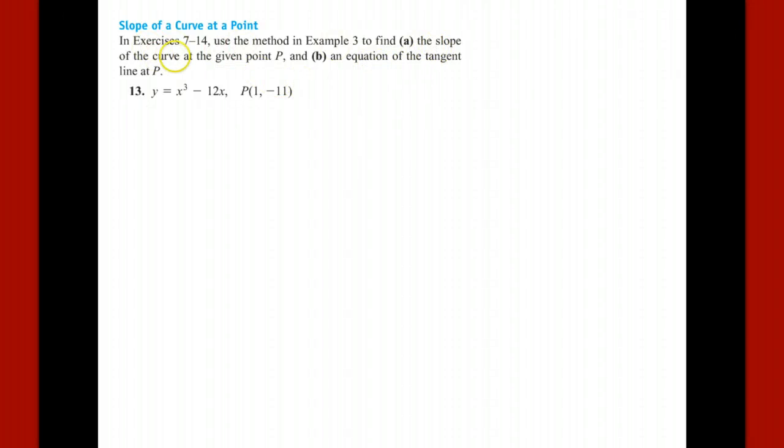Hello, in this question we're asked to find the slope of the curve y equals x cubed minus 12x at the point where x is 1 and y is negative 11, and then later the equation of that tangent line.